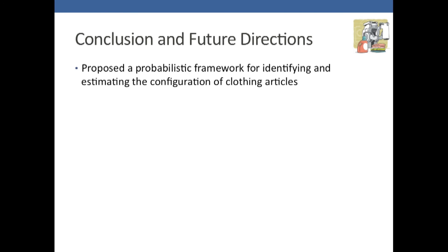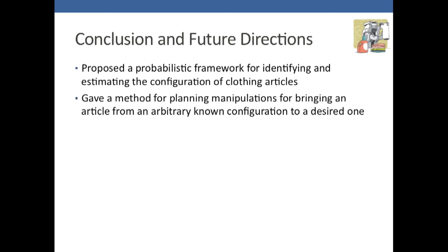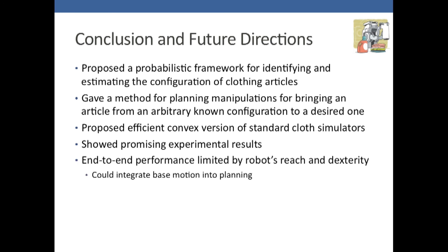We proposed a probabilistic framework for identifying and estimating the configuration of clothing articles. We gave a method for planning manipulations for bringing the article from an arbitrary known configuration to a desired one. We proposed an efficient convex version of a standard cloth simulator. Although the end-to-end performance was limited by the robot's reach and dexterity, we could get around that by integrating base motion into planning. We could also add appearance features for improved disambiguation performance.